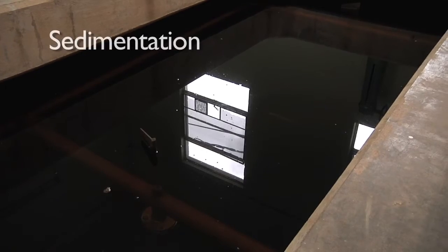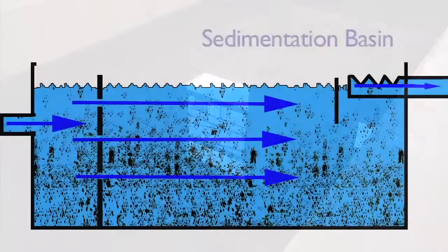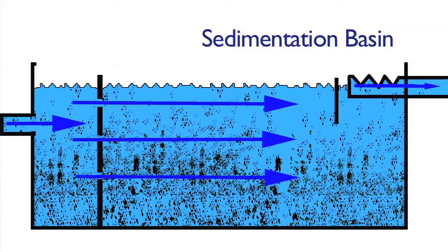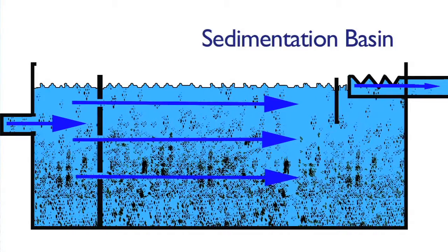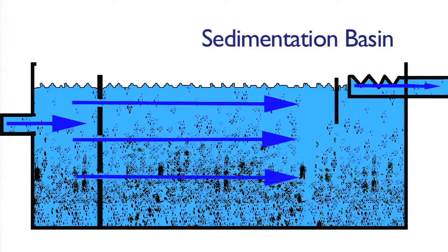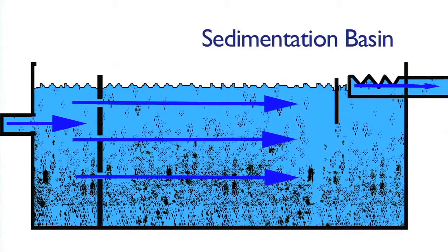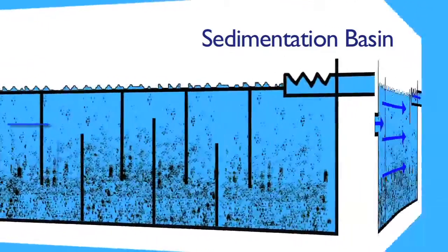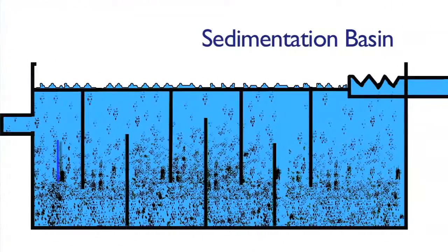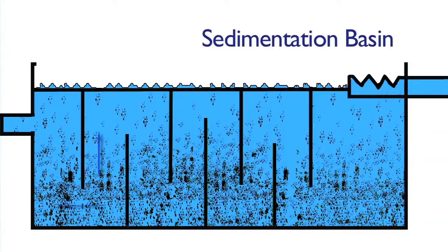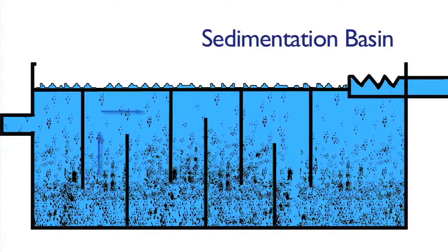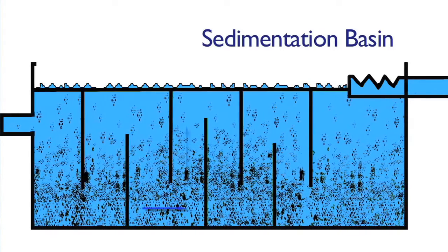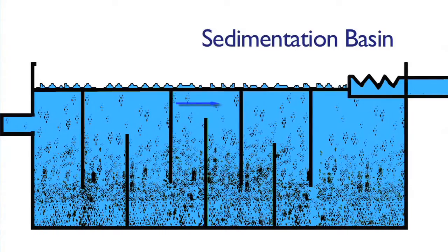The floc needs a place to settle out of the water. Taking place in the settling basins, the floc simply sinks to the bottom. Factors affecting good sedimentation are surface area of the basin and time. Time can be extended within the settling basin with baffling that makes the water flow very slowly in a zigzag pattern from one end of the basin to the other.